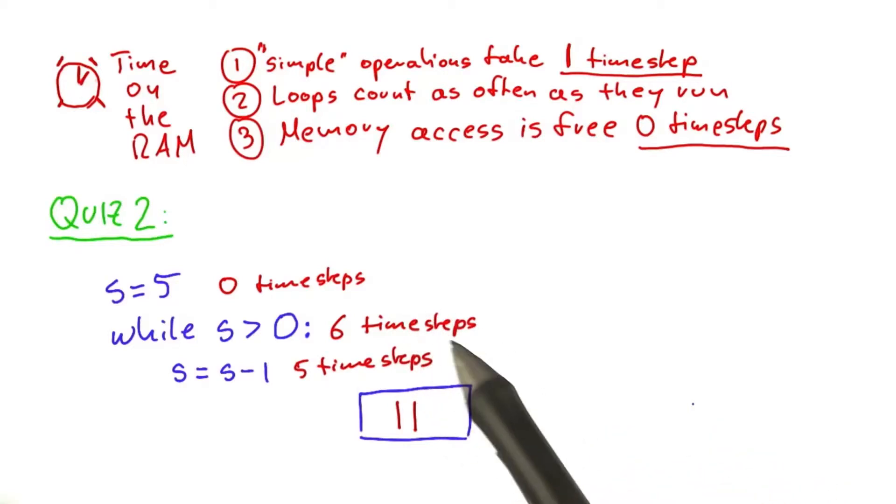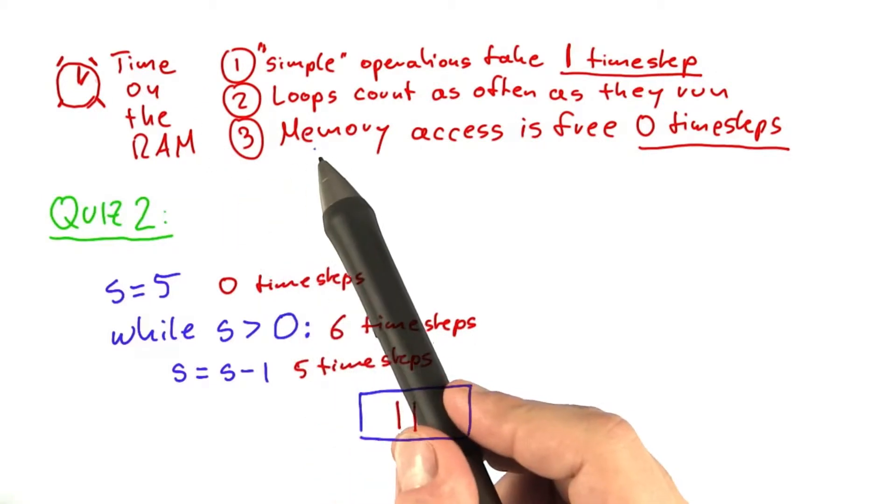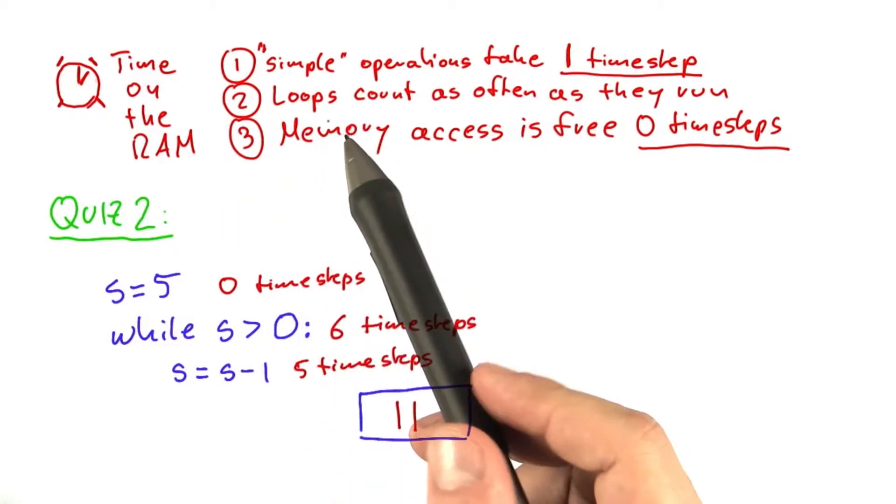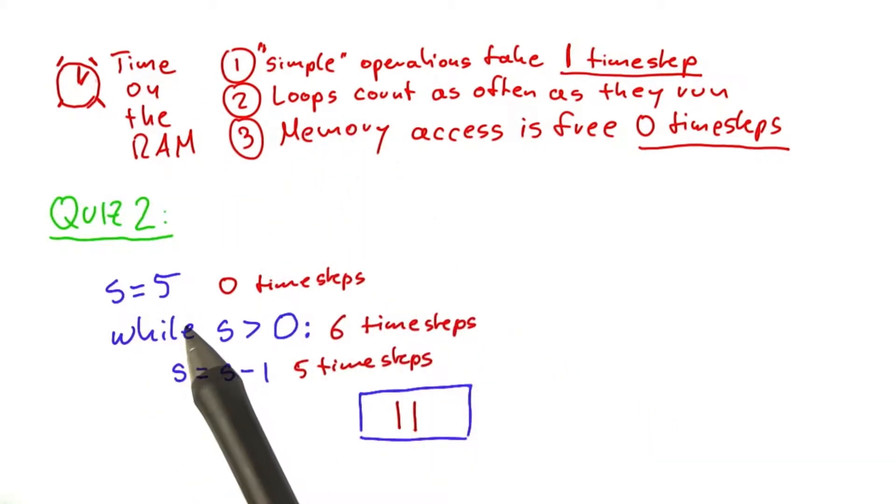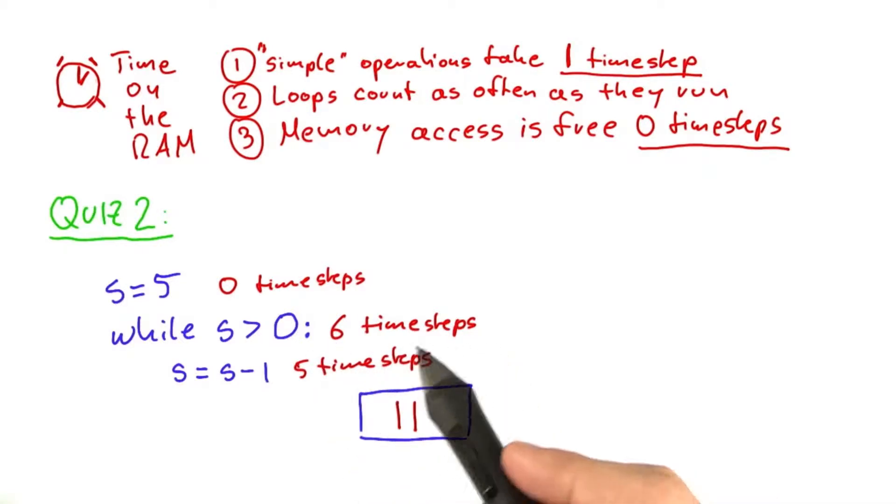As you can see, exactly counting the number of time steps, even though we have a very simple model of just three rules and a code that doesn't even have a variable input, is already quite tedious. We're later going to introduce a number of additional simplifications that will give us a little more leeway here, so that we do not have to go through this exact counting process but still learn something about the algorithm.